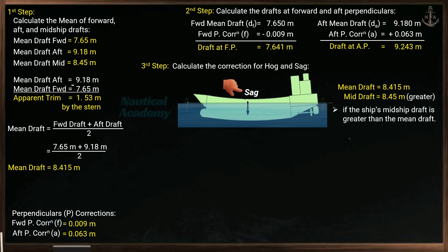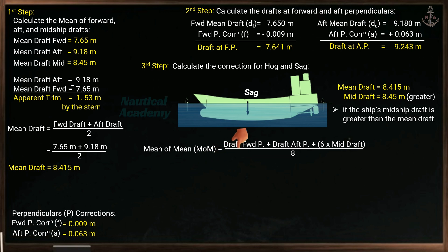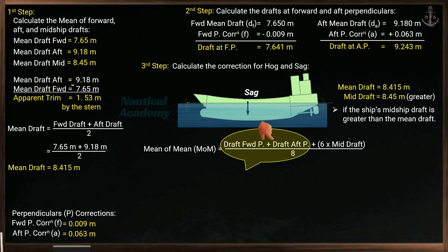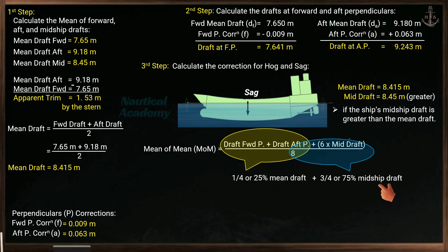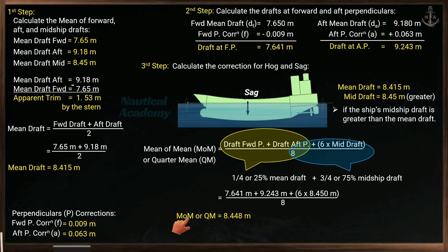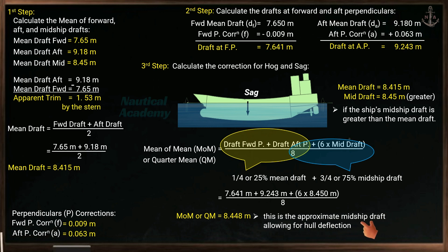To calculate the ship's mean draft with hull deformation, the formula is: mean of mean = (draft at forward perpendicular + draft at aft perpendicular + 6 × midship draft) ÷ 8. The sum of forward and aft draft divided by 8 represents 25% (one-quarter) mean draft, and 6 times midship draft divided by 8 represents 75% (three-quarters) midship draft — so the mean of mean is also the quarter mean draft. In this scenario, the mean of mean (quarter mean draft) is 8.448 meters. This is the approximate midship draft allowing for hull deflection. Note that the drafts used in this calculation must be the drafts at perpendiculars; for midship draft where there is no correction, the observed midship draft is used.